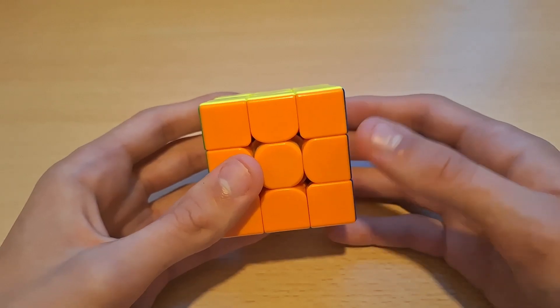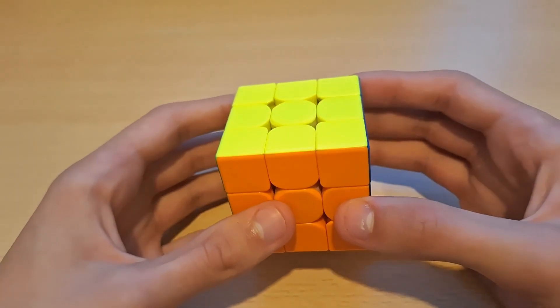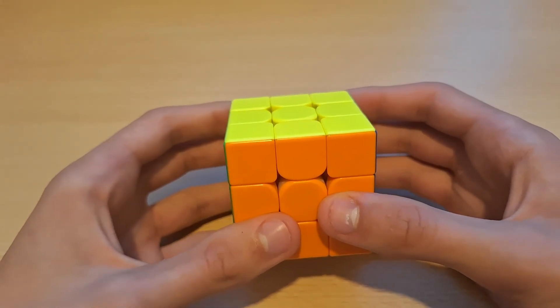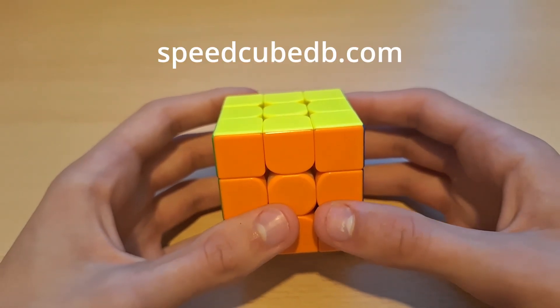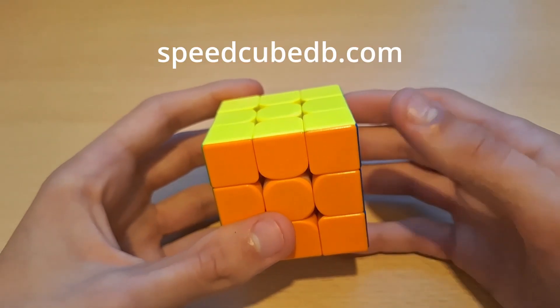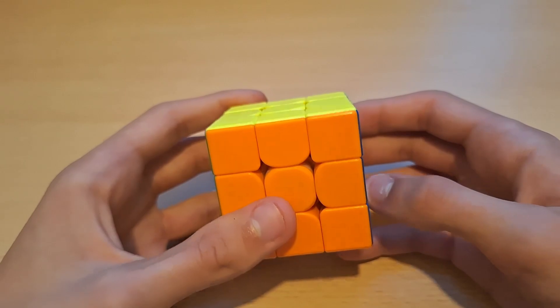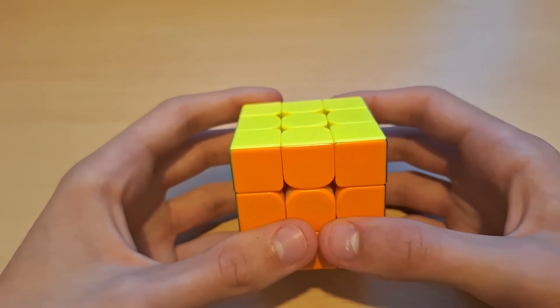And if you don't like some of the algorithms shown in this video, then you can actually go to the description down below. And this will take you to speedcube.db.com and there you can pretty much pick out other ZBLL cases if you like to. Alright.